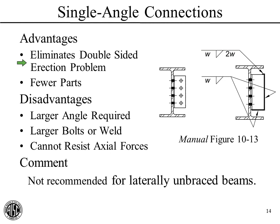Second, we have fewer parts than for a Double-Angle Connection. The disadvantages are that because we only have one angle and bolts in single shear, we may need a larger angle or larger bolts or welds. Another disadvantage is these can't really resist any meaningful axial loads in the beam due to the one-sided geometry. Also, these are generally not recommended for laterally unbraced beams, like we may have in an industrial application.